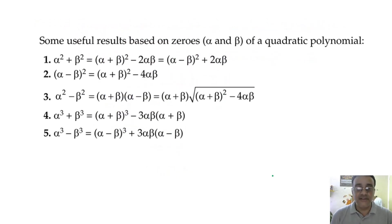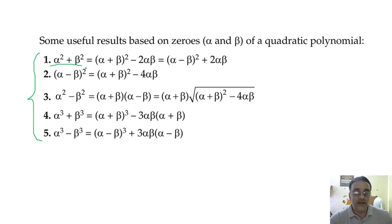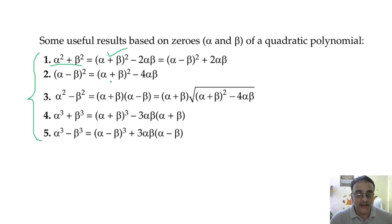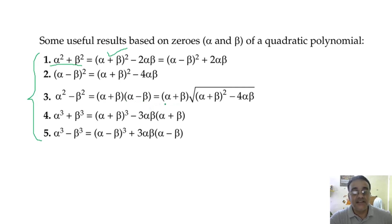Now let us move to questions based on α and β. Some formulas you must remember: α² + β² = (α + β)² − 2αβ, or alternatively (α − β)² + 2αβ. Also, (α − β)² = (α + β)² − 4αβ, and α² − β² = (α + β)(α − β).